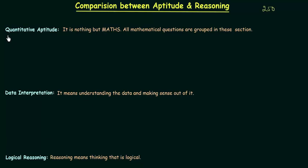We will start with quantitative aptitude — it is nothing but maths. All mathematical questions are grouped in this section. Whenever you have a problem in front of you and you need to use your mathematical skills, that question will be grouped in the section we call QA. QA is the abbreviation for quantitative aptitude.